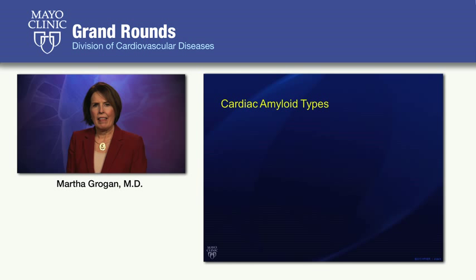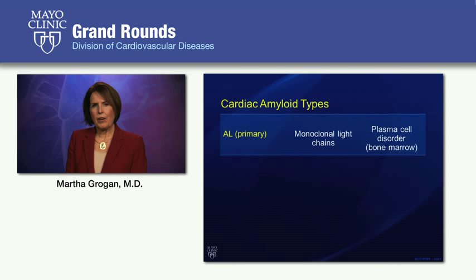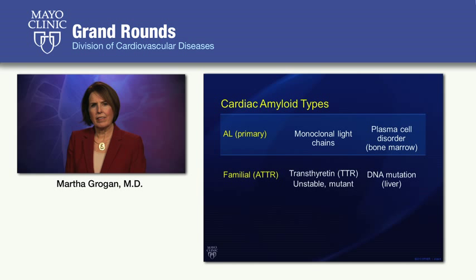AL amyloidosis, previously called primary systemic amyloidosis, is a disorder of monoclonal light chains due to a plasma cell disorder. The proteins are produced in the bone marrow. Familial amyloidosis is due to mutations in the transthyretin protein, which is made in the liver, and the unstable mutant version deposits to form amyloid fibrils in tissues and organs.